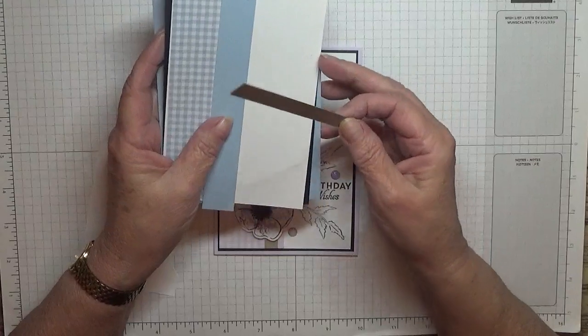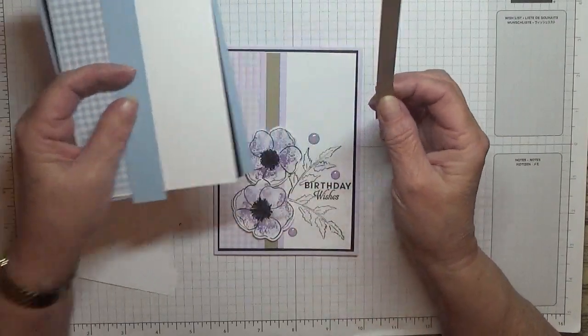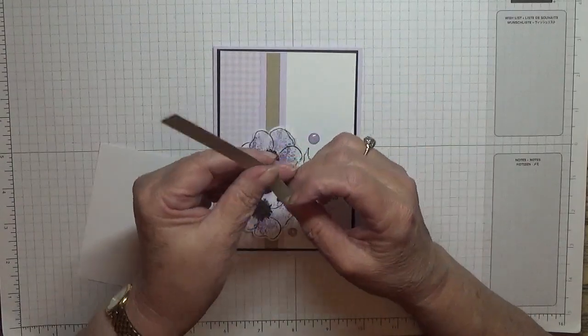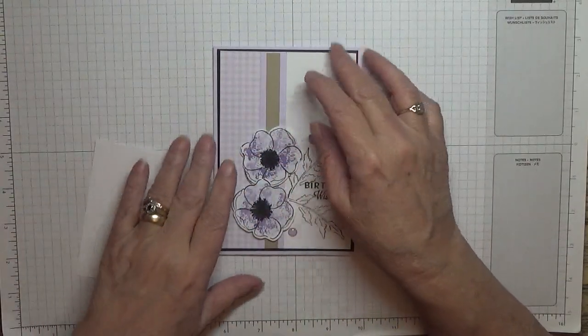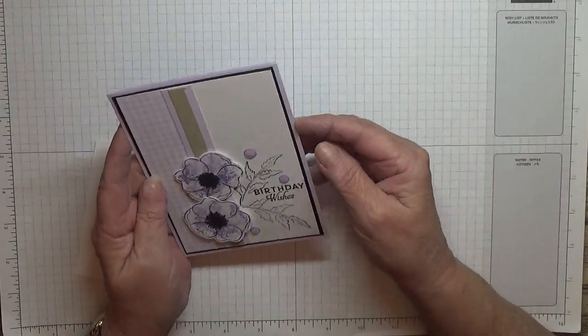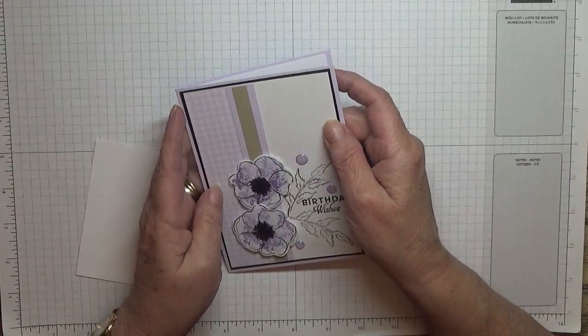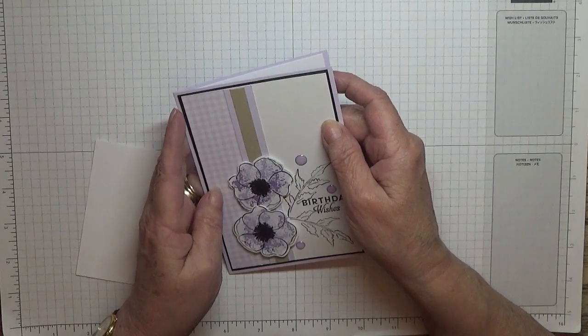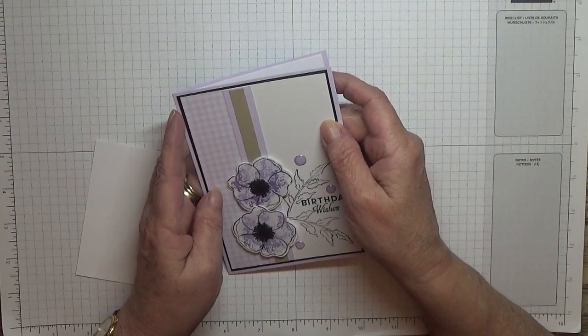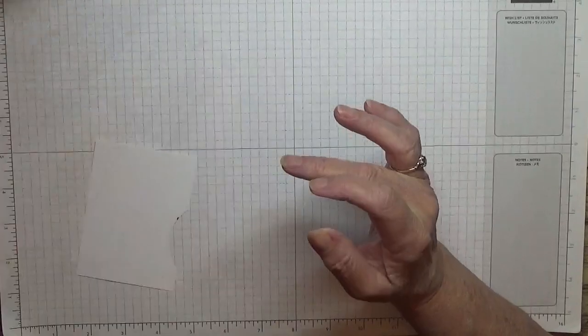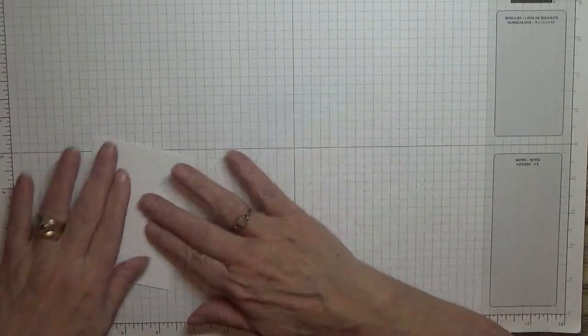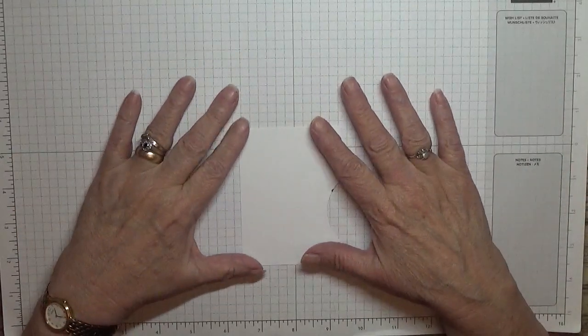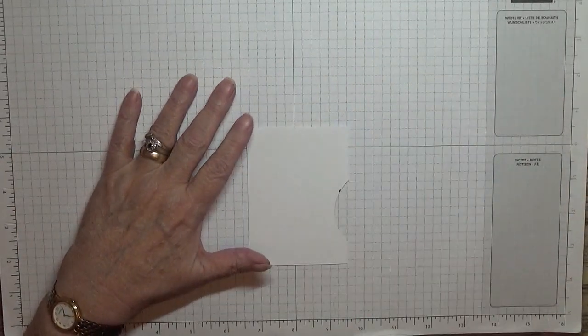When I had this card idea in my head, this was to make with a new stamp set, but my Stampin' Up order is not here yet. I've put in an order on the fifth of January, and today is the 24th of January, and I still haven't got my order. It's taking so long.